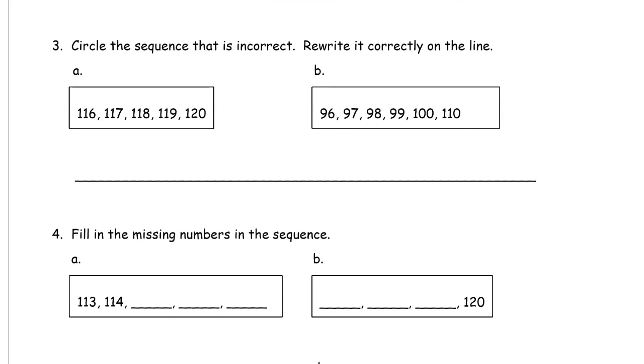Circle the sequence that is incorrect. Rewrite it correctly on the line. So here's the line. And let's see. We have, say it out loud. 116, 117, 118, 119, 120. That one seems okay.